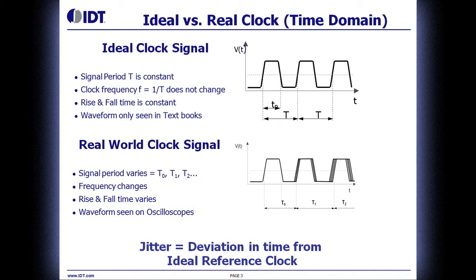Jitter very simply is the deviation in time from the ideal reference clock. The picture on the top has no jitter; the picture on the bottom has jitter.